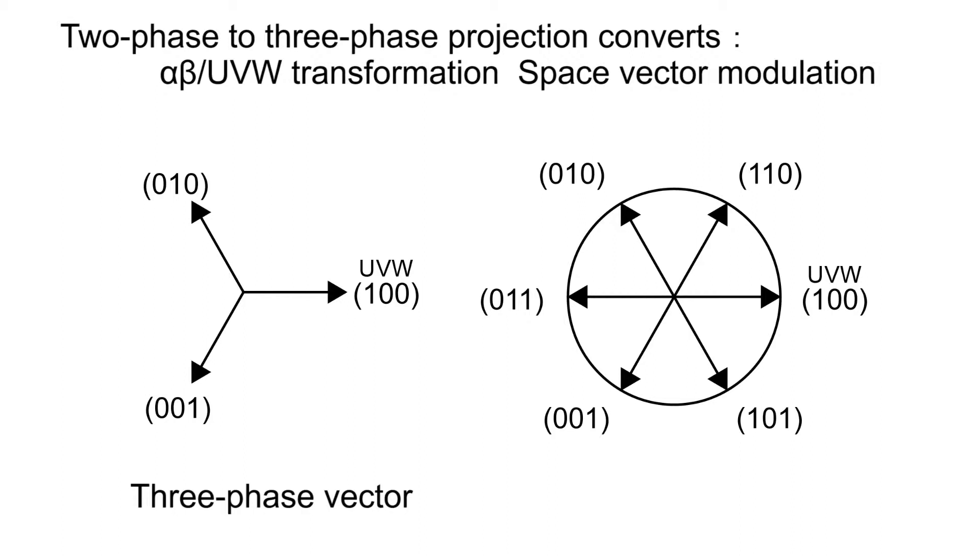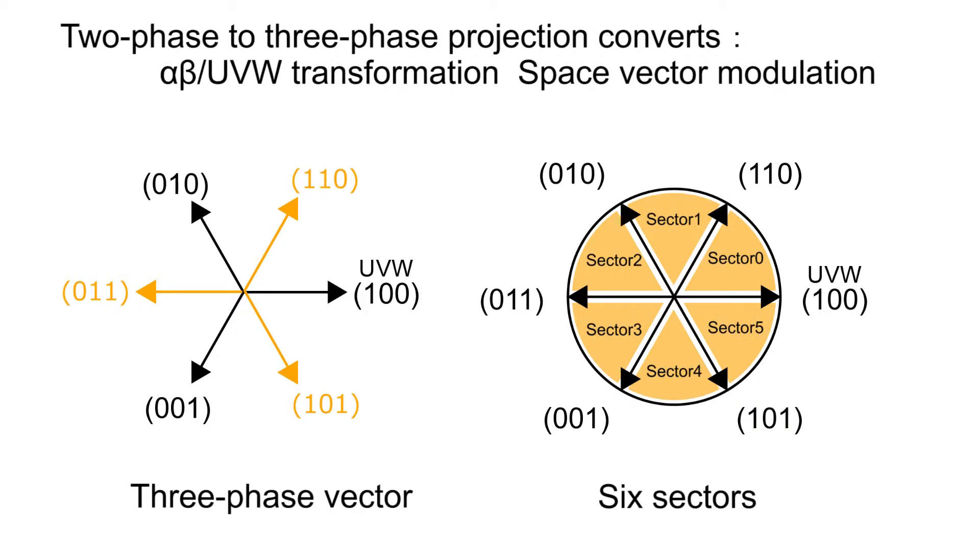Then, the extension of 100 comes in the middle of 010 and 001, and this extended axis is set to the vector 011. Similarly, as for the extension of 010, the extension is set to 101, and the extension of 001 is set to 110. Thereby, six quadrants are made. Here, each quadrant is called a sector.